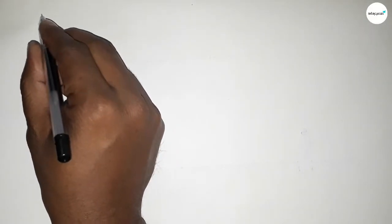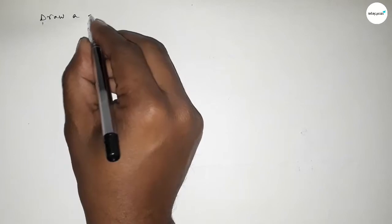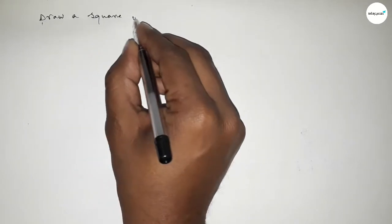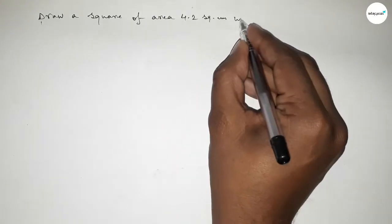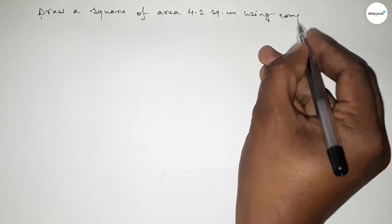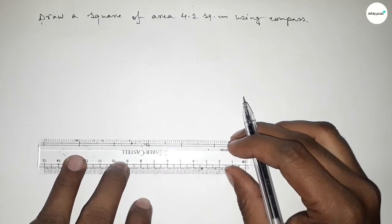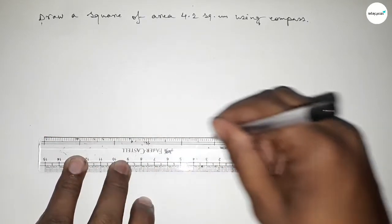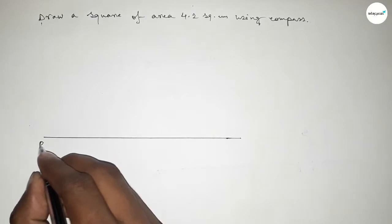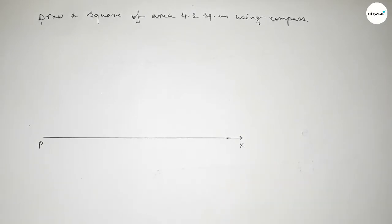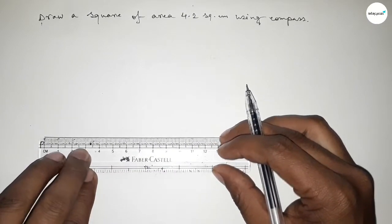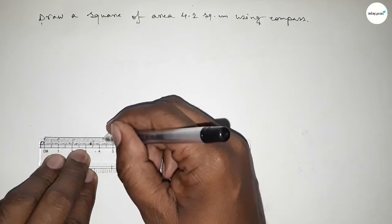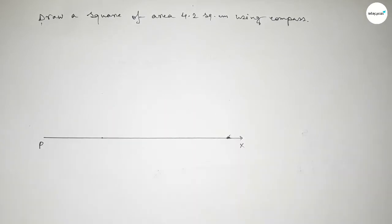Welcome to Size Share Classes. In this video we have to draw a square of area 4.2 square centimeters using a compass. First, draw a line of any length, taking point P and point X. Then mark a length of 4.2 centimeters on the line PX, taking here point A.